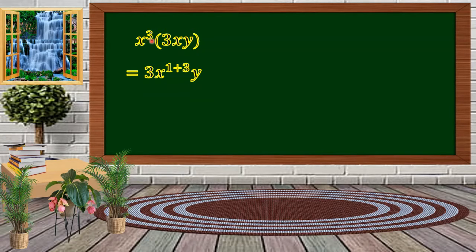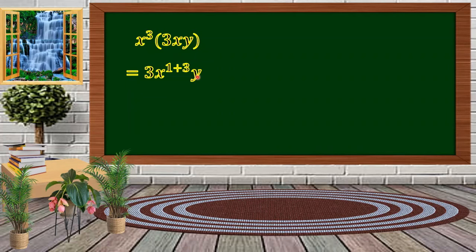The x here has an exponent of 1, and the other factor x raised to 3 has exponent 3. So we're just going to add 1 plus 3 — that's the exponent of x — and then we carry along the y. Simplifying further, we get 3x raised to 4y. That is the product of x raised to 3 times the quantity 3xy.